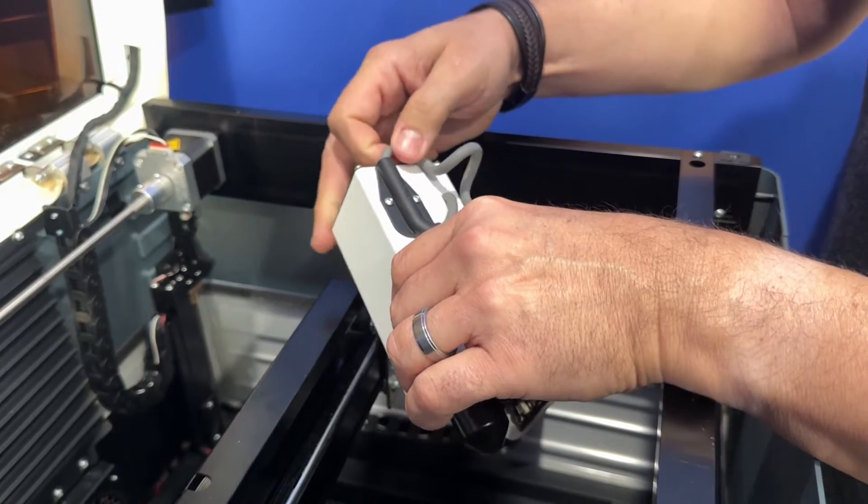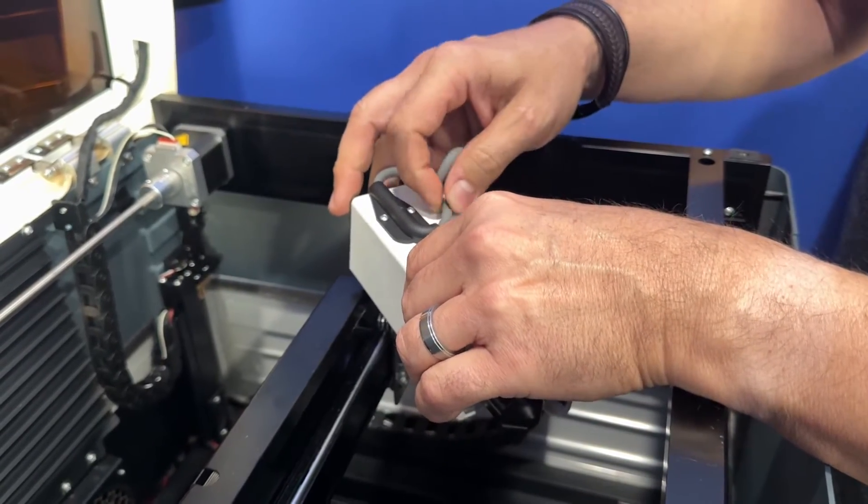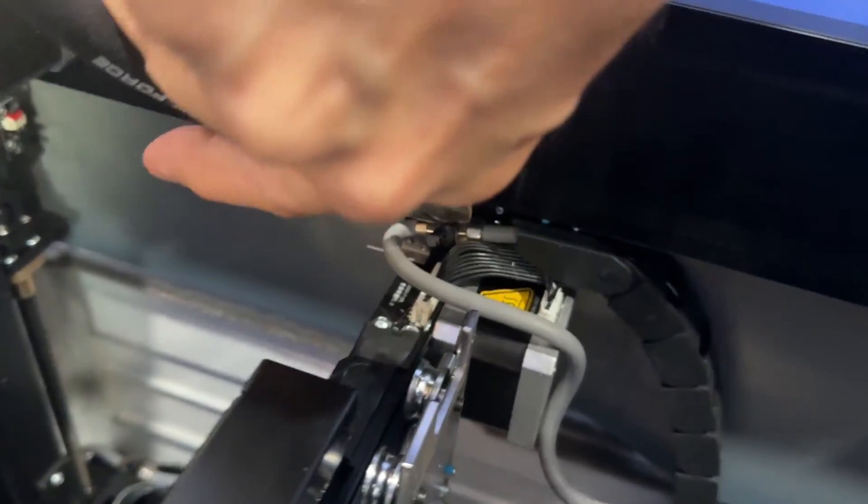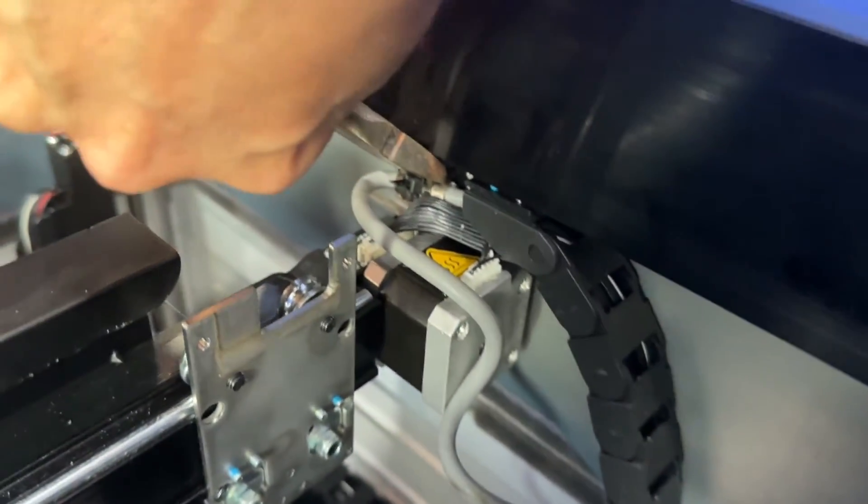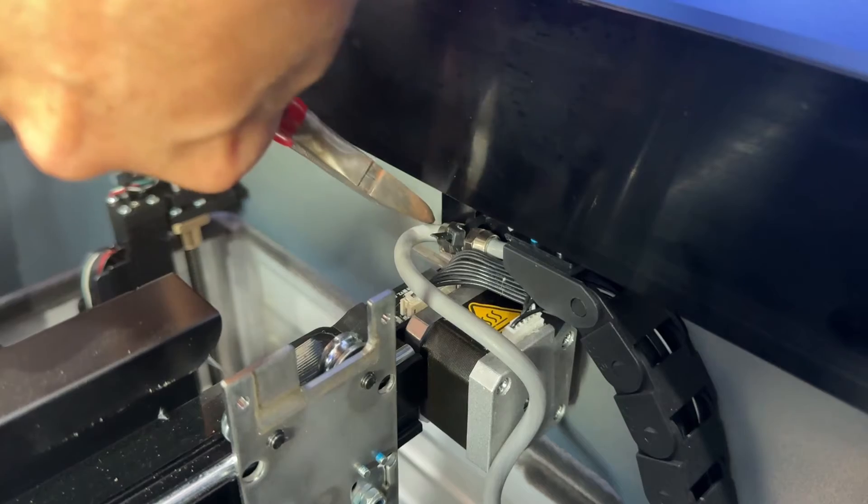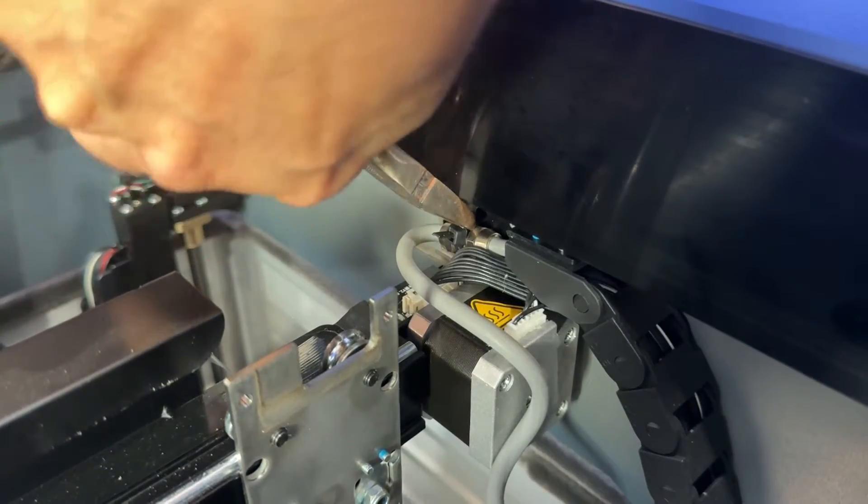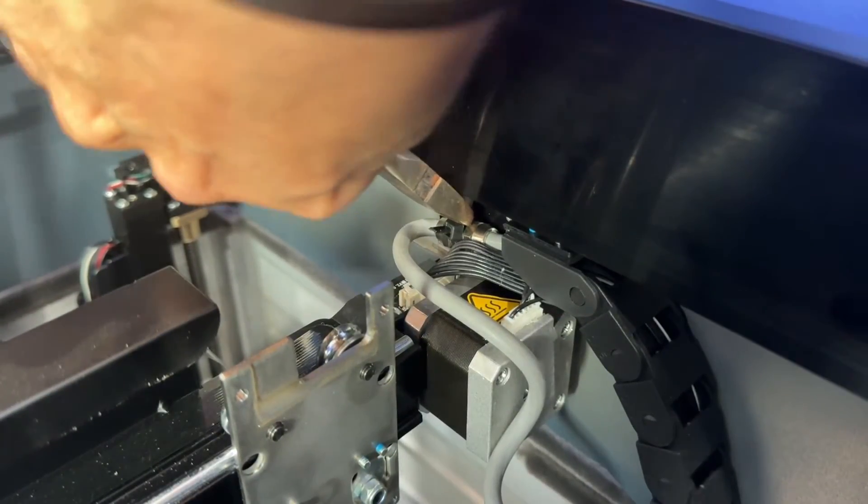So the air assist is still tucked in here and it's still connected to my machine. The infrared laser module does not need air assist because you're not going to be cutting. So you just clip this little plastic tie off. Be really careful because you don't want to nick that air assist tube.